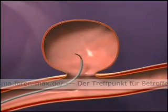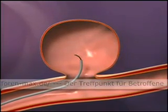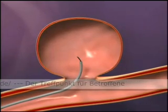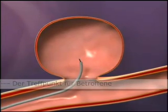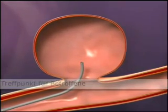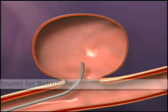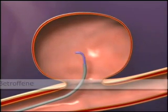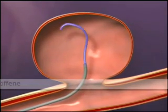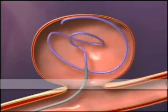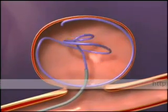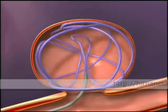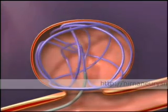The guide wire is retracted, and the microcatheter is optimally positioned for deployment of the first matrix 3D coil. The first matrix 3D shaped coil is placed into the aneurysm through the microcatheter. The matrix 3D coil deploys into a complex basket as the alternating small and large omega-shaped loops are delivered into the aneurysm.